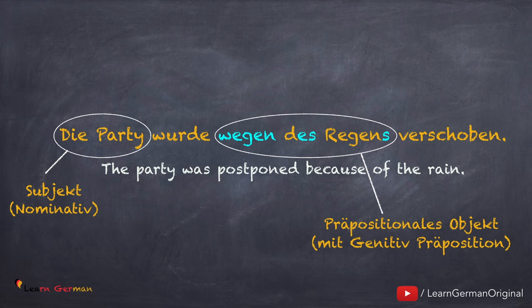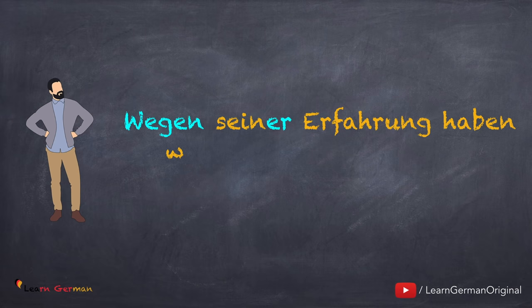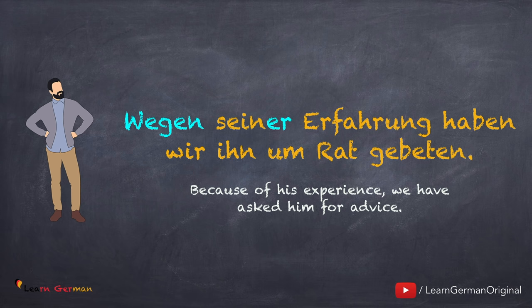Wenn du Genitiv wiederholen willst, kannst du gern unser Video darüber sehen. Den Link findest du unten in der Beschreibung. Hier ist das zweite Beispiel: Wegen seiner Erfahrung haben wir ihn um Rat gebeten. Egal ob wir Definitartikel, Indefinitartikel oder Possessivartikel nach der Präposition haben, sie bekommen alle Genitiv-Endungen.